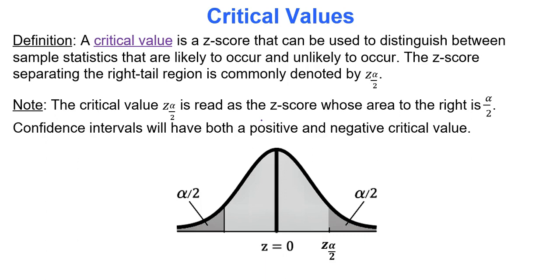We start confidence interval development using a sample statistic called a point estimate. Because whenever you look at a sample there's error involved, we have to create a margin of error — an error bound — around that sample statistic. The first step is to find something called a critical value, which is a z-score along the x-axis of the bell curve that can be used to distinguish between sample statistics that are likely and unlikely to occur.